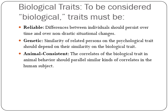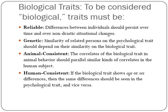It should be animal consistent — the correlate of the biological trait in animal behavior should parallel similar correlates in human behavior. If in animals a certain biological characteristic causes them to be withdrawn, but in humans that same biological characteristic causes them to be outgoing, there's probably something amiss — that wouldn't make sense and we wouldn't consider it a biological trait.